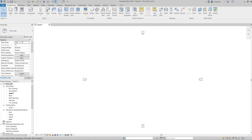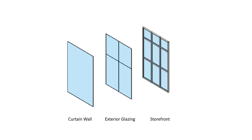Let me show you an image so you can understand the difference better. From left to right: the first is curtain wall, which has no grids or mullions — it provides the most flexibility but you need to create everything yourself. The middle one is exterior glazing, which has preset grids that you can change. The last one is storefront, which has preset grids and mullions that you can also modify.